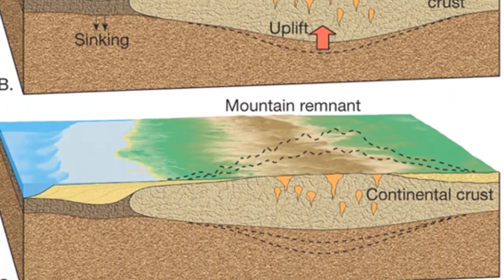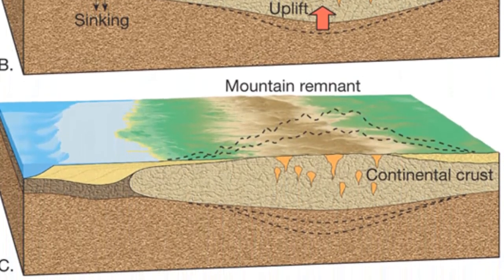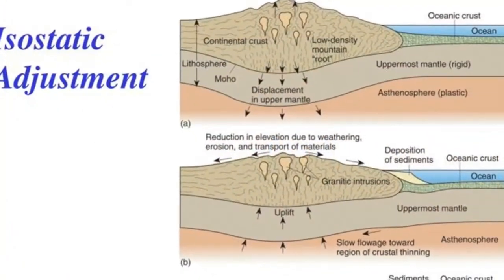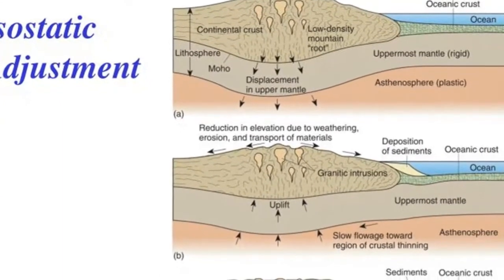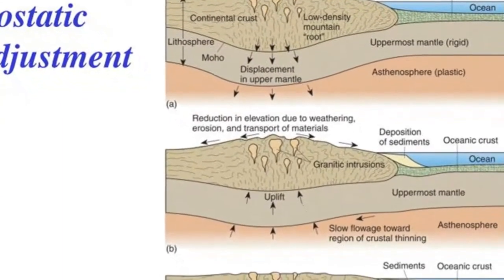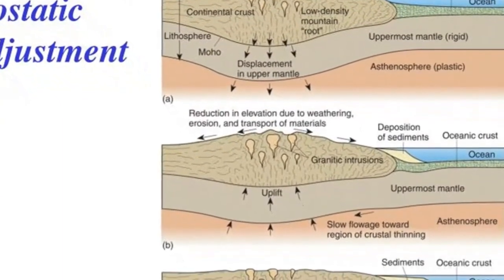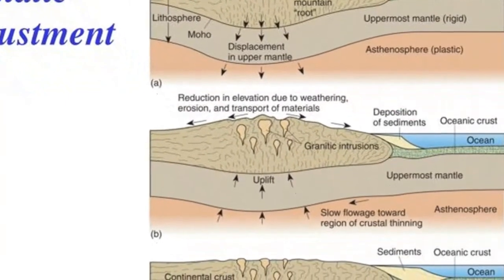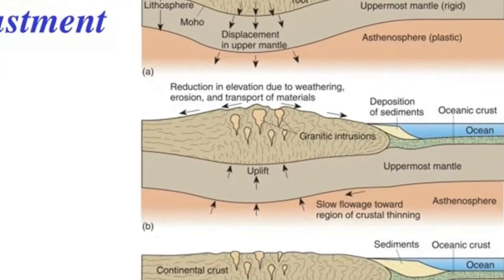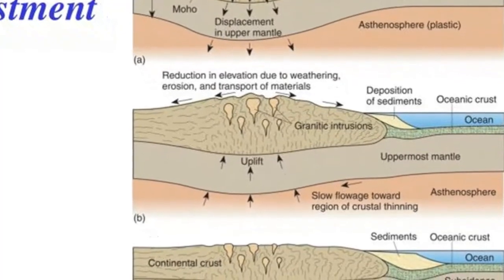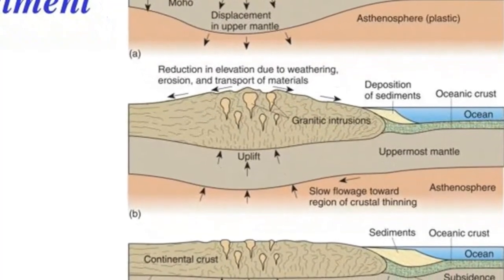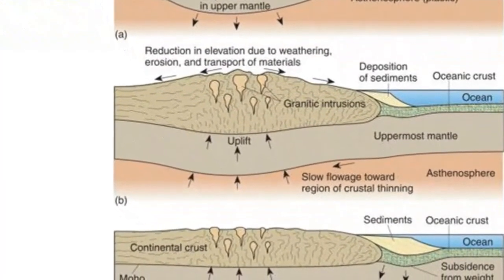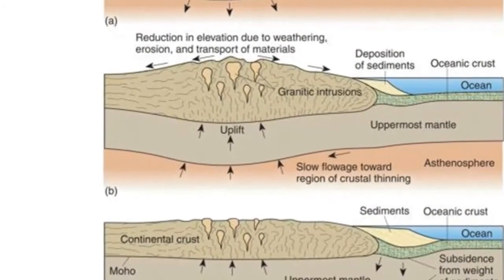In addition to the large crustal displacement driven mainly by plate tectonics, gradual up-and-down motions of the continental crust are observed at many locations around the globe. Although much of this vertical movement occurs along plate margins and is associated with active mountain building, some of it is not.